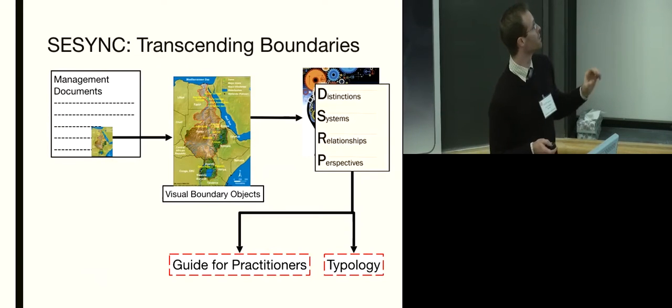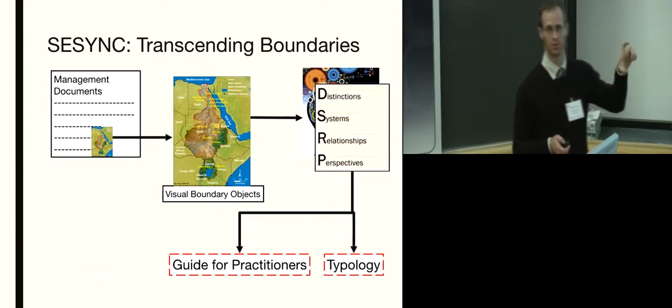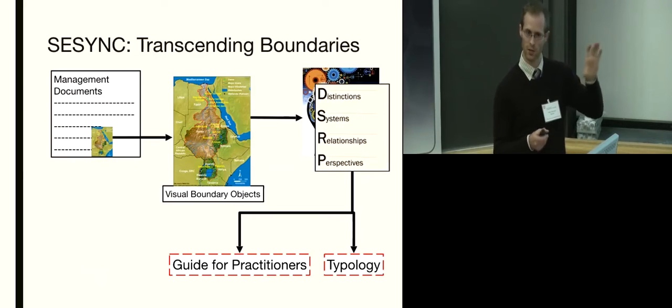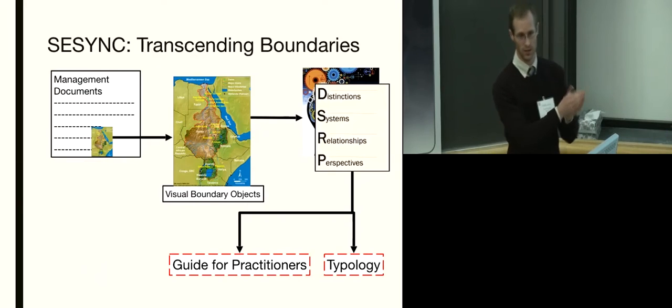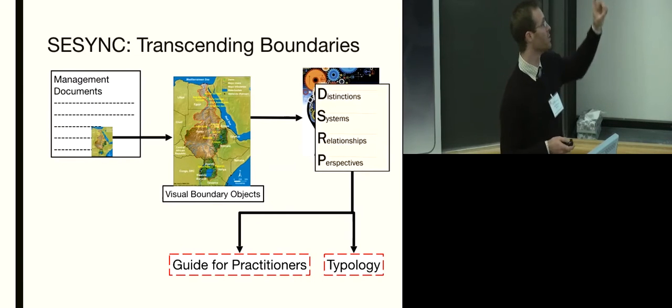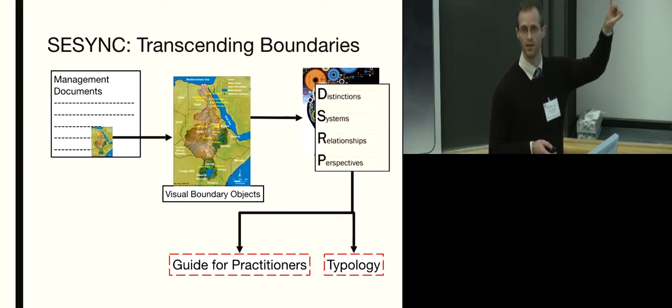The idea was that we were going to look at a range of management documents related to particular agreements in places like the Nile, the Columbia, the Ganges. We were going to look for visual elements within those management documents with the idea that those are serving as an interface between people making decisions and people trying to understand their place in those decisions. These would form boundary objects between those people. They're going to convey information and then engage the public with a discussion on what that information means.